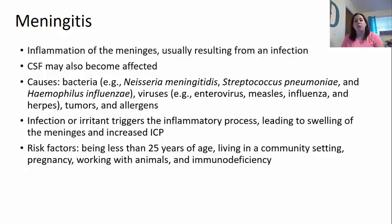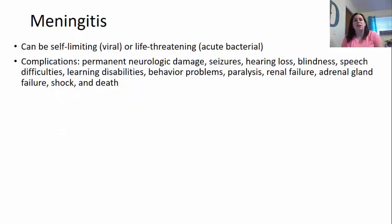Pregnancy, working with animals, and even some immunodeficiencies could lead to meningitis due to the immune system being altered. Meningitis is normally self-limiting if it's viral, meaning it's going to have to run its course and then eventually go away. However, it could be life-threatening — this is more in cases of the bacterial type infection.